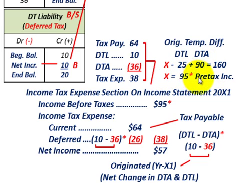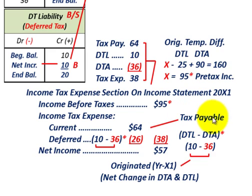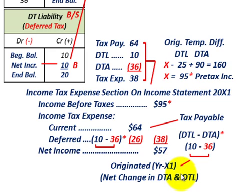We knew the taxable income for the year was $160,000, and solving for X we come up with $95,000 pre-tax income. So income before taxes is $95,000. We report the income tax expense: the current amount was $64,000 — that was our tax payable. The deferred amount of income tax expense is the difference between our deferred tax liability and deferred tax asset. For the deferred tax liability, we had $10,000.